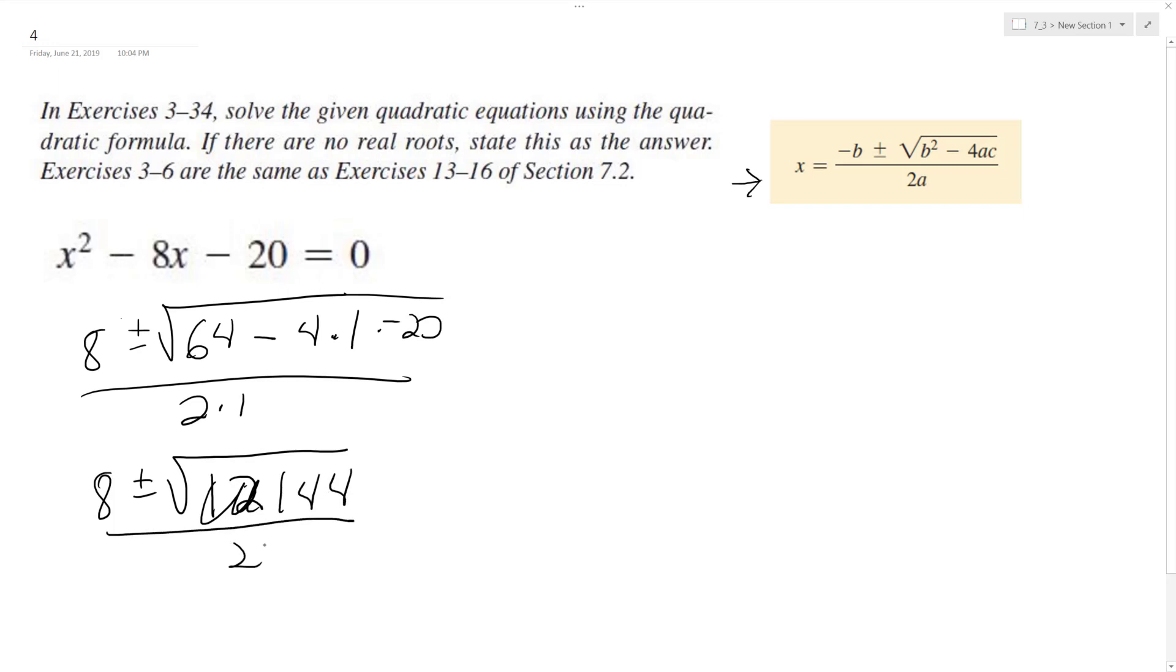Over 2. Yeah, 8 plus or minus the square root of 144, which is equal to 12 over 2. So negative 4 over 2 and 20 over 2, which is negative 2 and 10. And that's it.